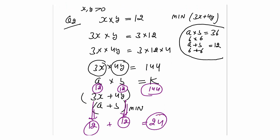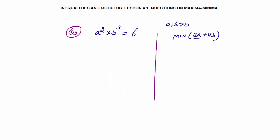These questions are comparatively quite easier than the maximum value questions because you simply need to convert the numbers into the given form. A few more examples will make the concept much clearer. Question 3: a² × b³ = 6, and you need to find the minimum value of 3a + 4b, given a and b are positive real numbers.